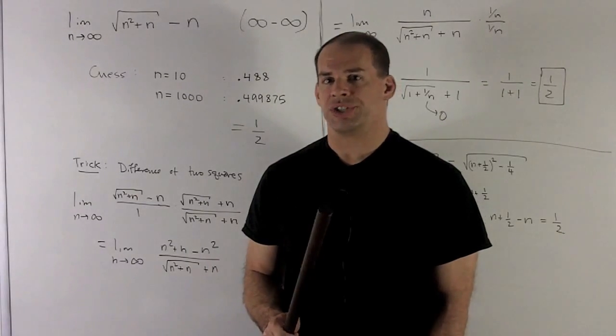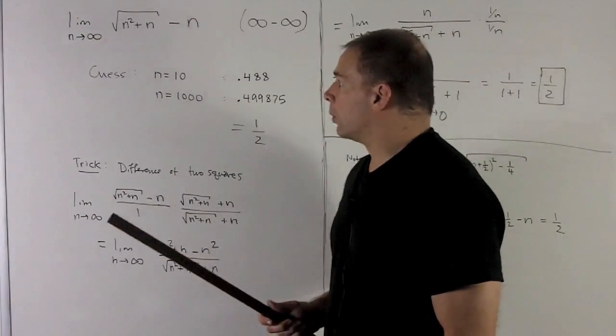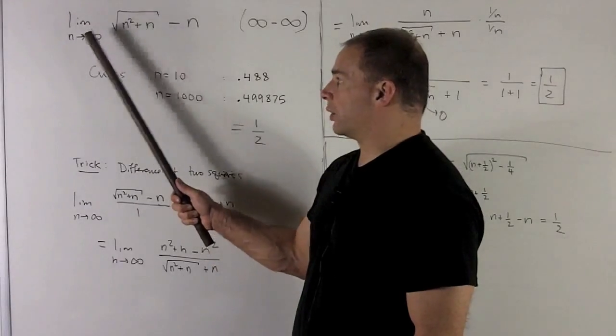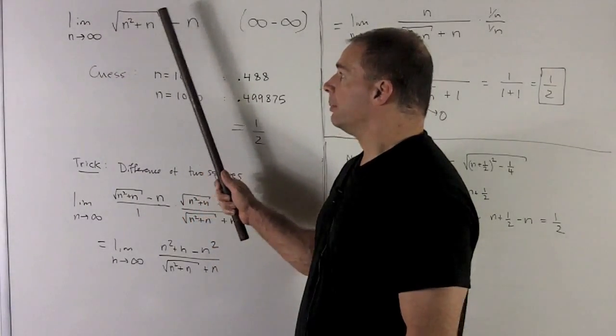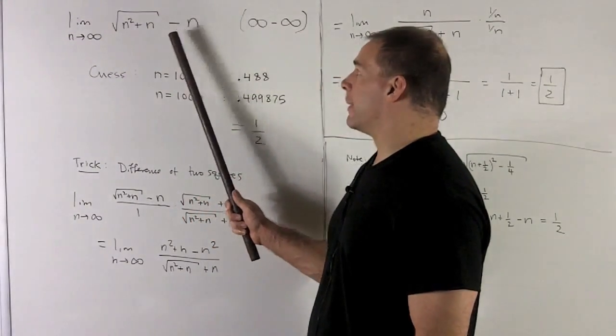So let's take a look at a neat convergent sequence. What we're looking at is limit as n goes to infinity, radical n squared plus n minus n.